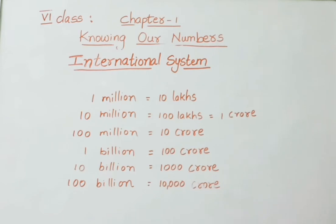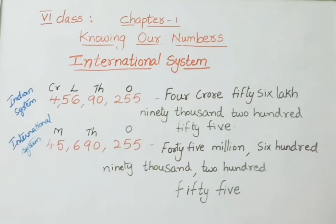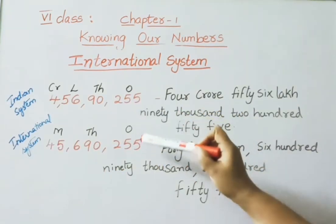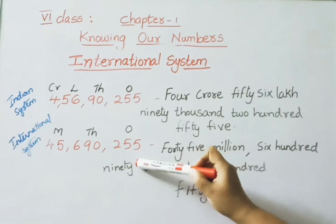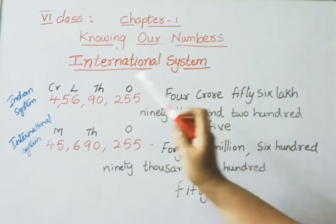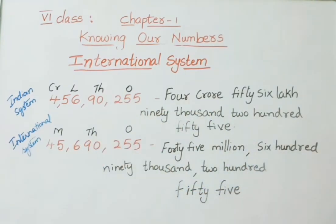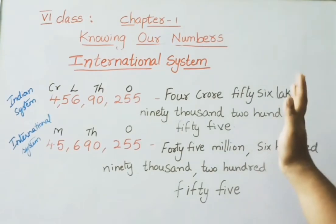Now let us see how to write number names in the International System. I have entered the same number represented in both the Indian system and the International system. In the Indian system, from right to left the first three digits come under the ones period.